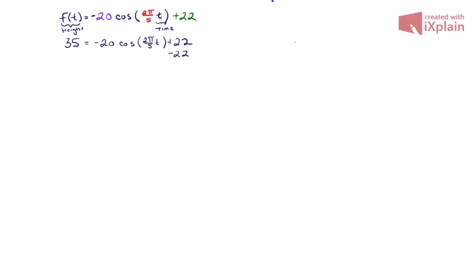So I'm going to subtract 22 from both sides. The goal being to get the cosine function completely by itself. So now I have 13 is equal to negative 20 times the cosine of 2 pi fifths times t. We'll divide both sides by a negative 20. And since I know that this fraction isn't going to reduce, I'm just going to leave it as is. So this way I don't have to deal with a nasty looking decimal value.